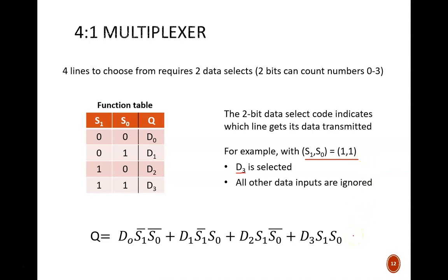The equation guiding the selection is shown below. It follows the pattern of giving each data input line its own product term, in which it is ANDed with both S inputs strategically. Continuing the example of selecting D3, both S values are 1, which means this product term simply equals D3.